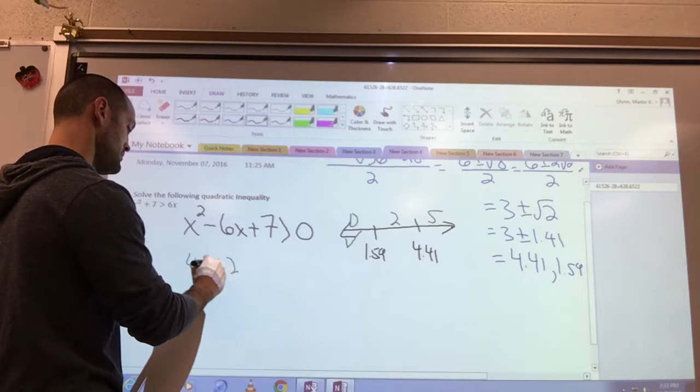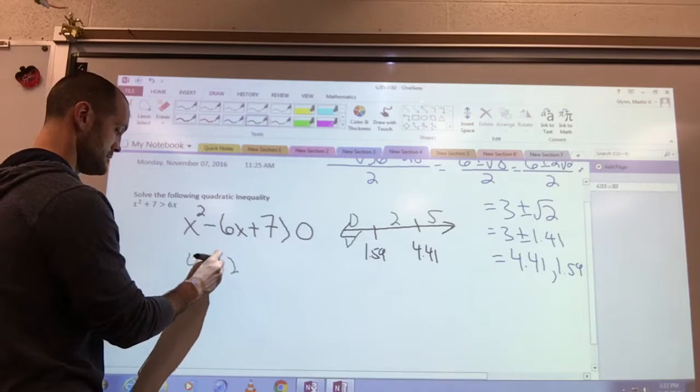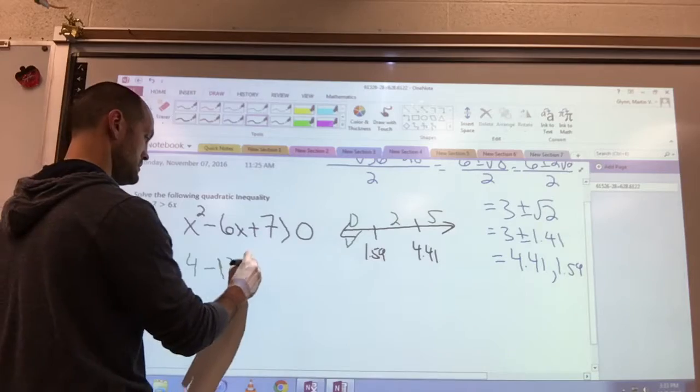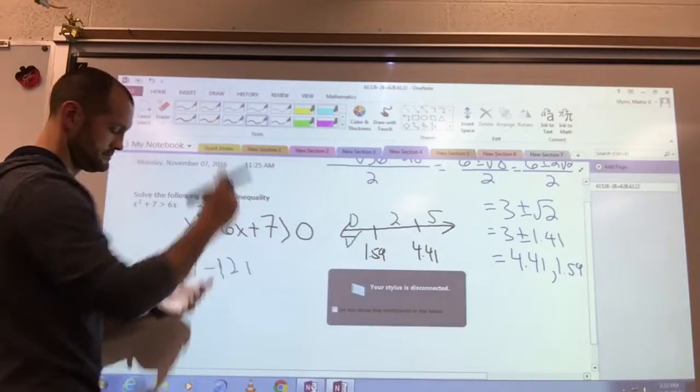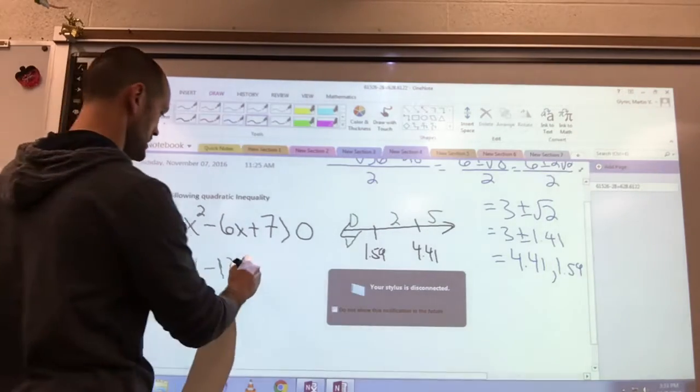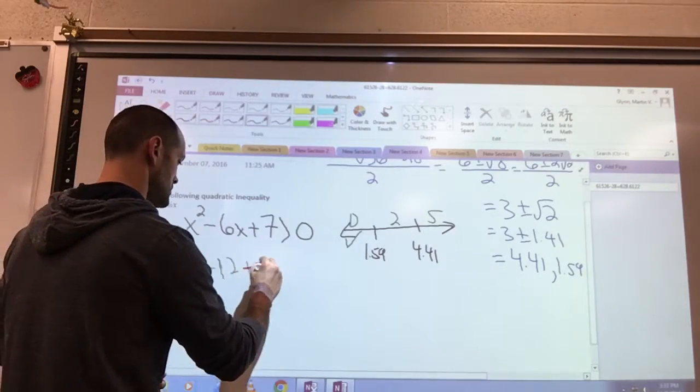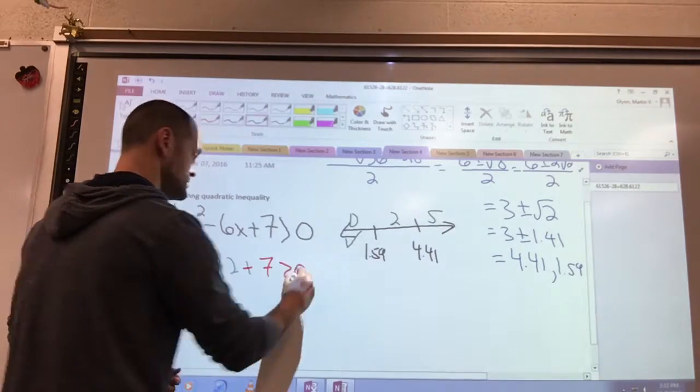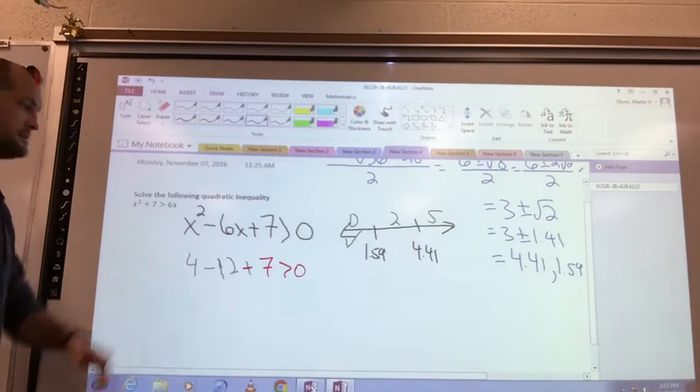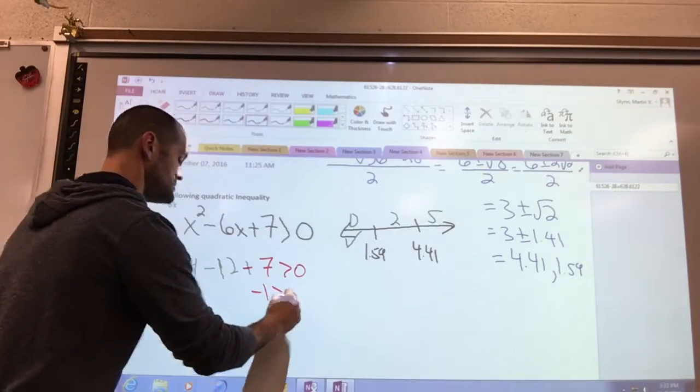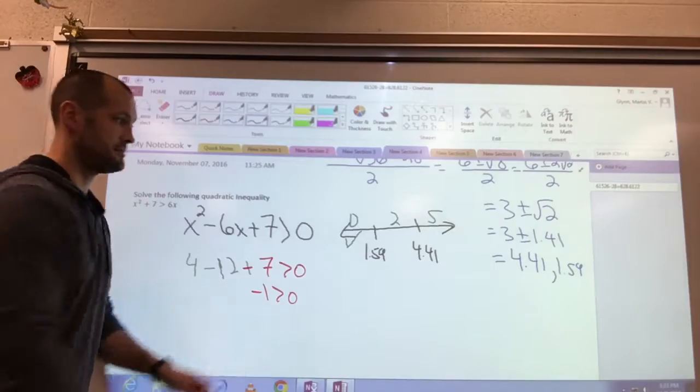Two—let's plug two in. We get four minus 12. If this ever worked correctly, plus seven—I don't even know why I try. You know what, adapt. Plus seven greater than zero. This gives us negative one greater than zero. That's a false statement, so it does not work there.